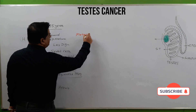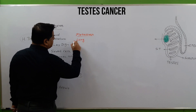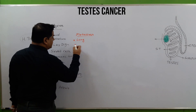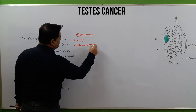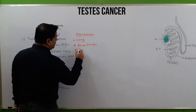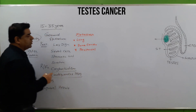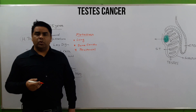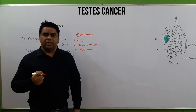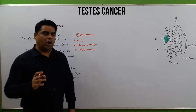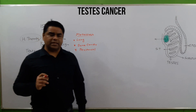Regarding metastasis, testicular cancer can spread to the lungs, bones, pelvic bones, and peritoneal cavity organs. Lymph nodes in the surrounding area can also be involved, leading to lymphatic cancer. Spread can occur through the blood or through the lymphatic system.